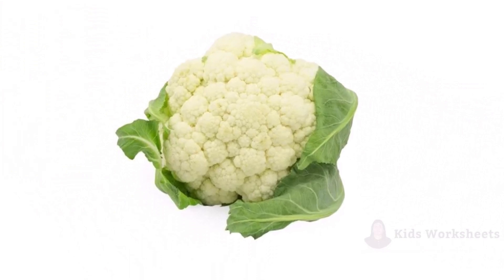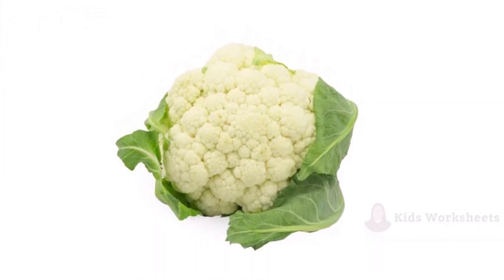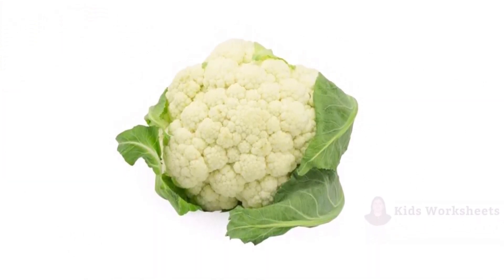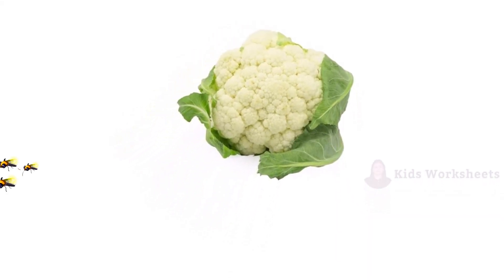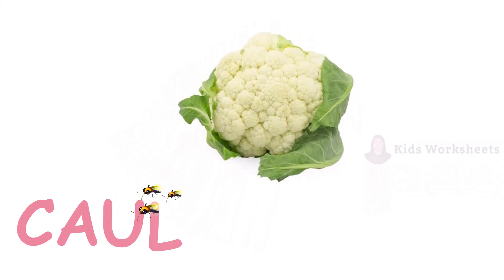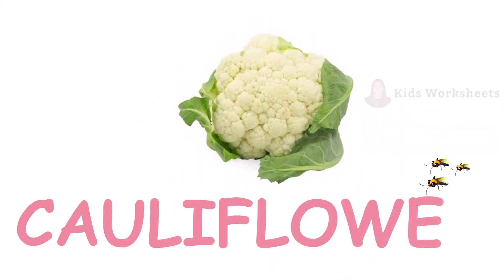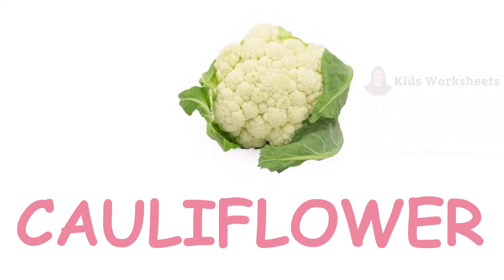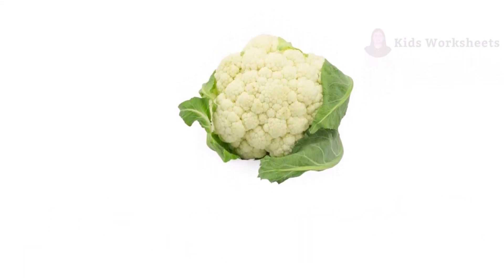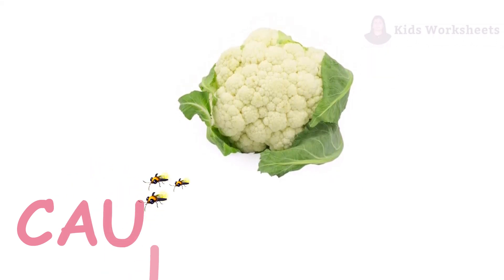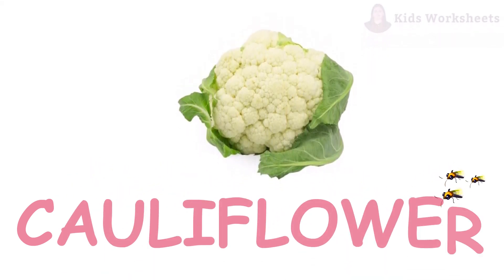Next vegetable is Cauliflower. This is a cauliflower. The spelling of cauliflower is C-A-U-L-I-F-L-O-W-E-R. Cauliflower. Once again, repeat the spelling: C-A-U-L-I-F-L-O-W-E-R. Cauliflower.